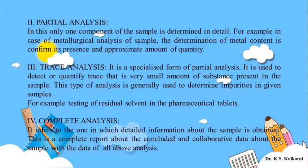The second type is partial analysis. In this, only one component of the sample is determined in detail. In the proximate analysis, you estimated the elements present very roughly; but in partial analysis you find out a particular component in detail. For example, in metallurgical analysis of a sample, the determination of metal content confirms its presence and approximate quantity. When you perform analysis for a metal you find a definite amount and identify which metal is present — this is called partial analysis.